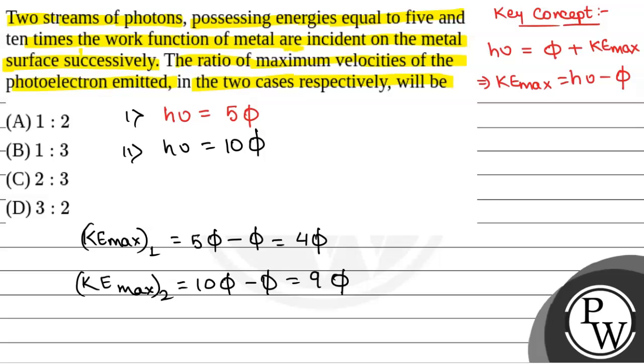So from here we will have ½mv₁² is equal to 4φ and from here we will have ½mv₂² where v1 and v2 are the maximum velocities of photoelectron emitted in the two cases respectively. This will be 9φ.